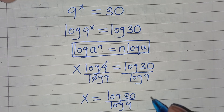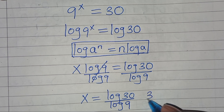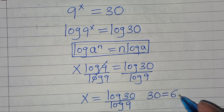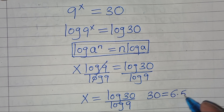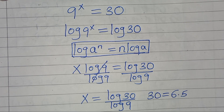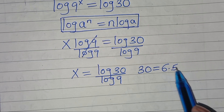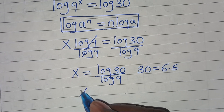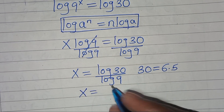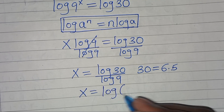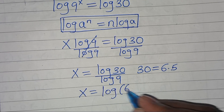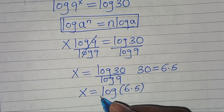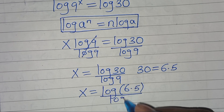Now, from here we can express 30 as 6 times 5. So let's substitute this, so that we have x equal to log(6 times 5) divided by log 9.